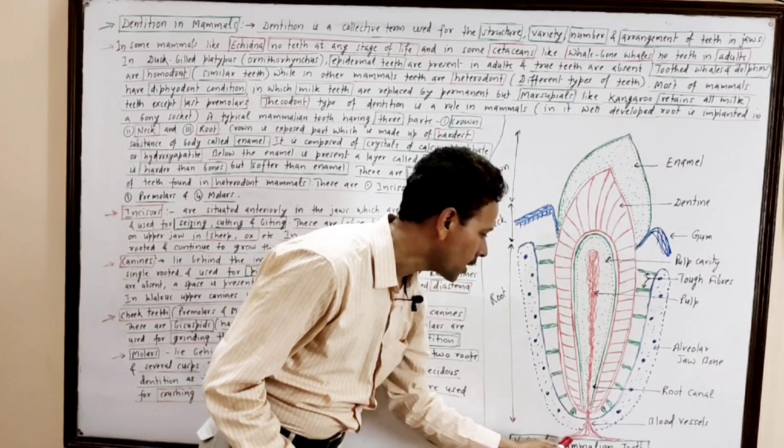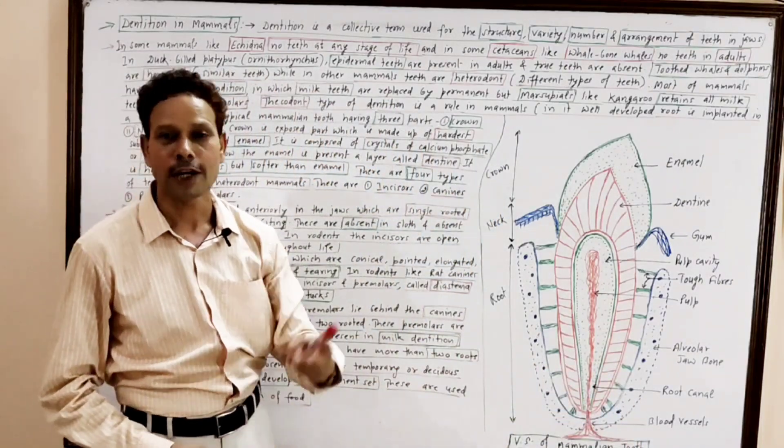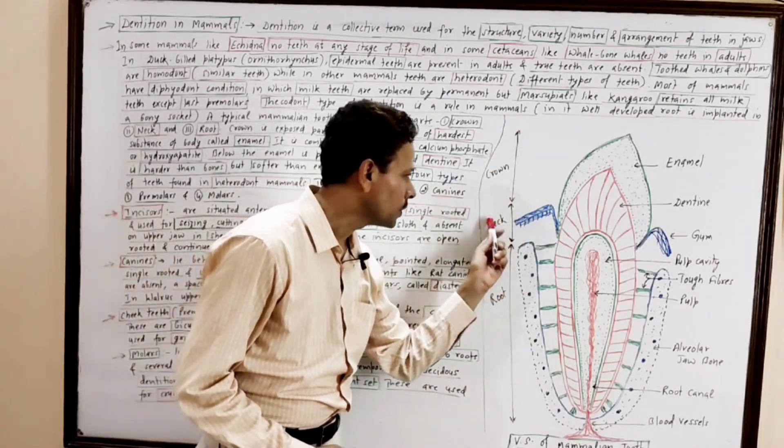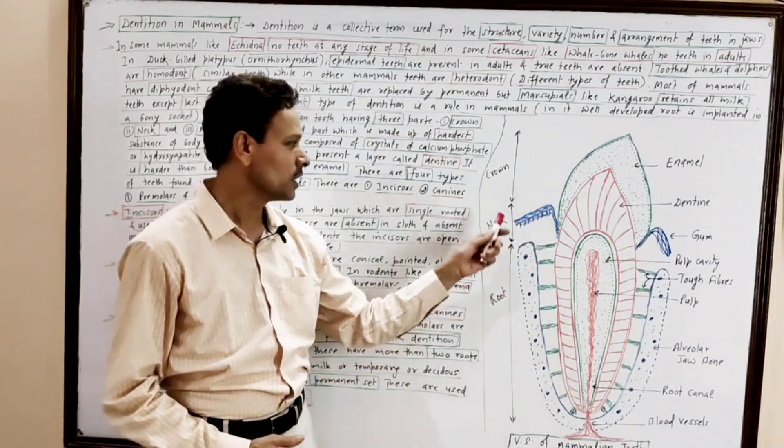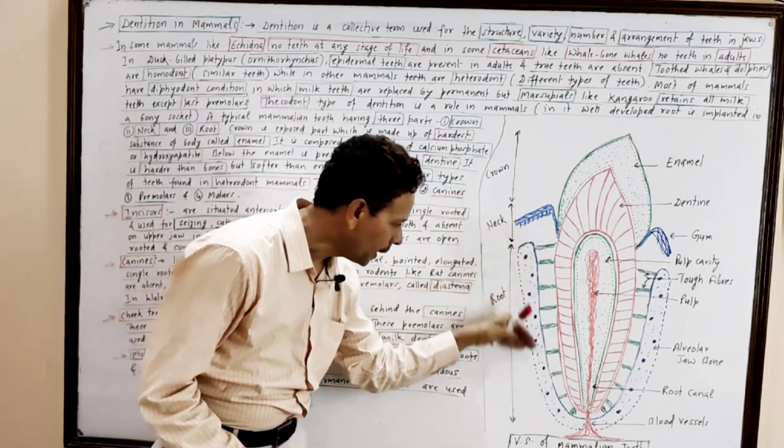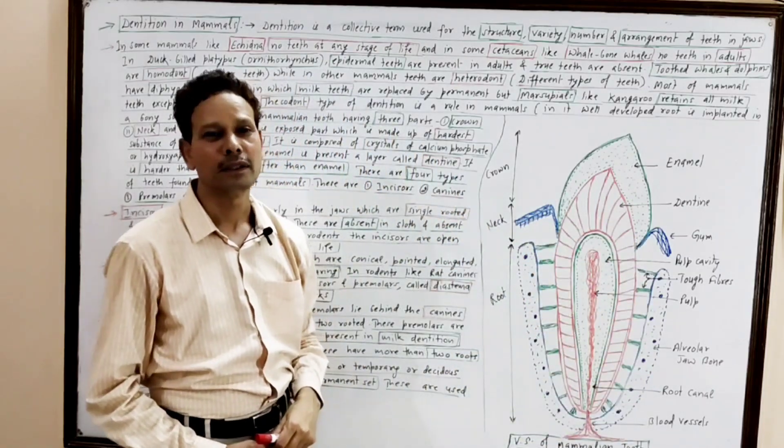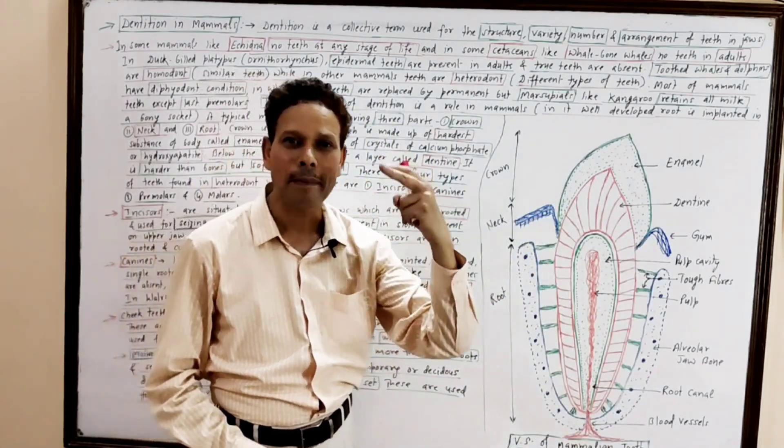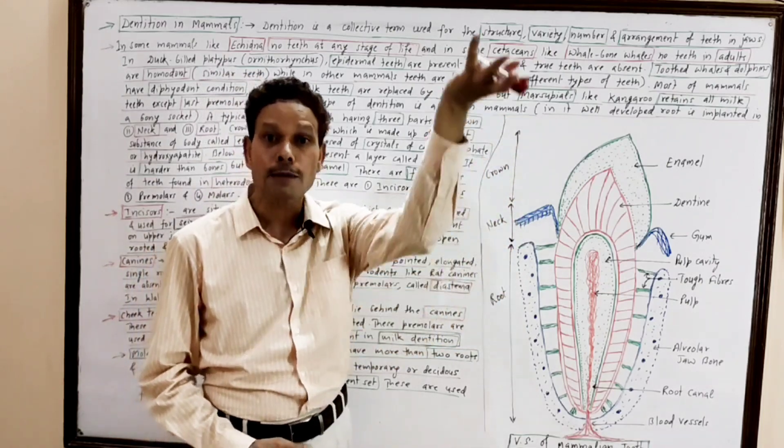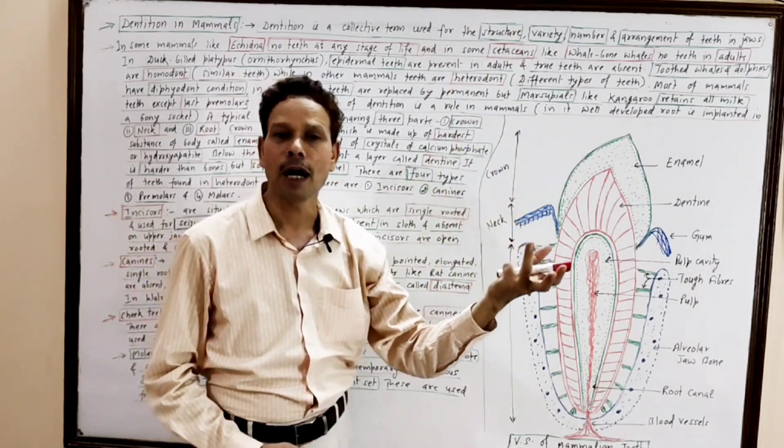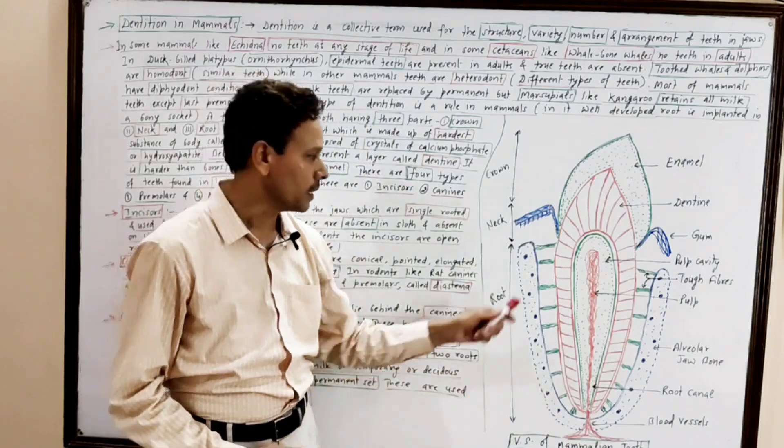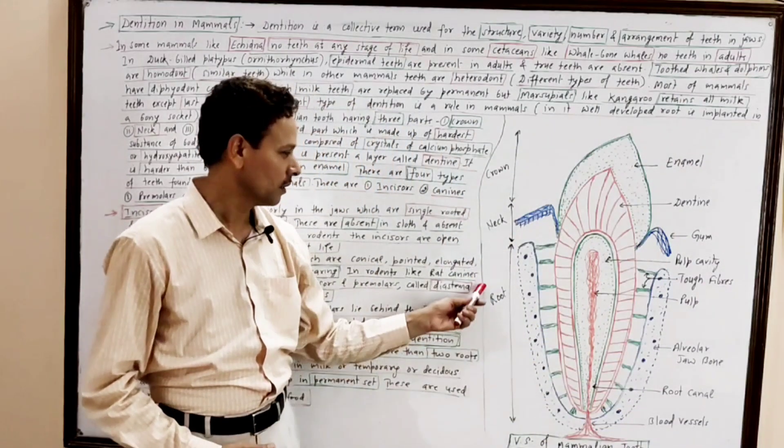This is the structure of vertical section of a typical mammalian tooth. That shows three parts. This outer exposed part is crown. This middle part of tooth, which lies in gum region, is neck. And this lowermost basal part of a tooth, which is embedded in this bony socket, is root. The crown is upper exposed part, the neck is middle part which lies in gum region, and this lowermost basal part that is embedded in this bony socket is root.